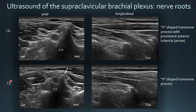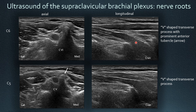Now we go further cranial to C6 and C5. These are enclosed by a V-shaped transverse process, and especially C6 has a prominent anterior tubercle — sometimes called the carotid tubercle — and the further cranial you go, the smaller the transverse process becomes. Just when the roots leave the spinal canal, they are completely hypoechoic because there is no inter-fascicular epineurium, which forms further distally. This is why the roots are hypoechoic and they look like blood vessels at their foraminal exit.